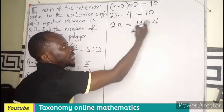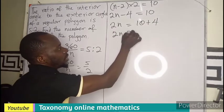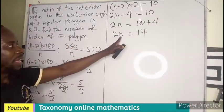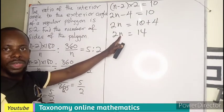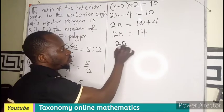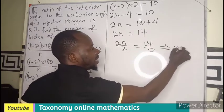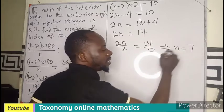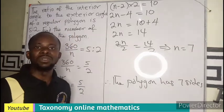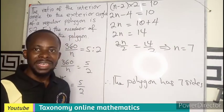Collecting like terms: 2n = 10 + 4, so 2n = 14. Dividing both sides by 2, n = 7. Therefore, the polygon has 7 sides.